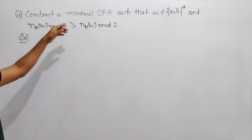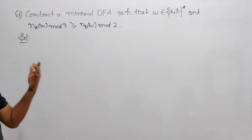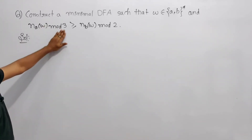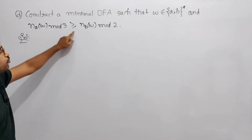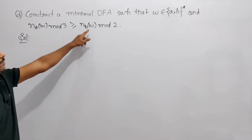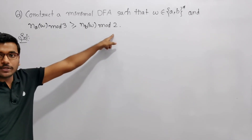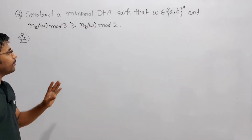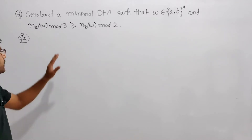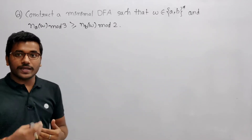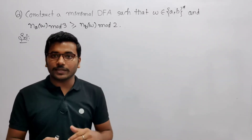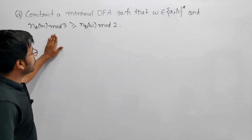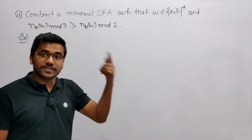Construct a minimal DFA such that w belongs to any combination of a and b, and the number of a's remainder when dividing by 3 should be greater than or equal to the number of b's remainder when dividing by 2. Note: I am not saying the remainder of a's divided by 3 should be 0 — I am saying a's remainder should be greater than or equal to b's remainder.